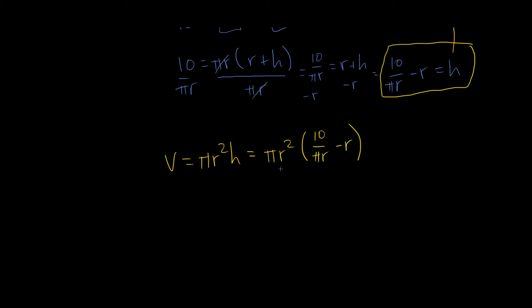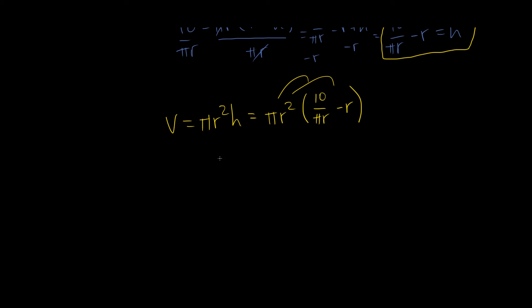So this pi r I can actually distribute to both terms, and it's going to give me, well the pi is going to cancel, one of the r's is going to cancel, so I'm just going to end up with 10 r minus pi r cubed. Really cool. So this is our volume equation now.